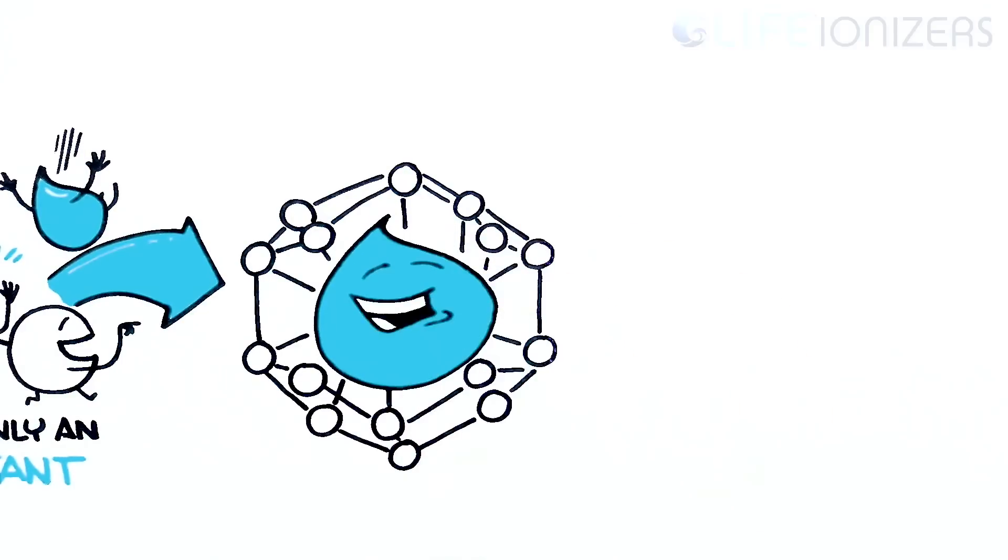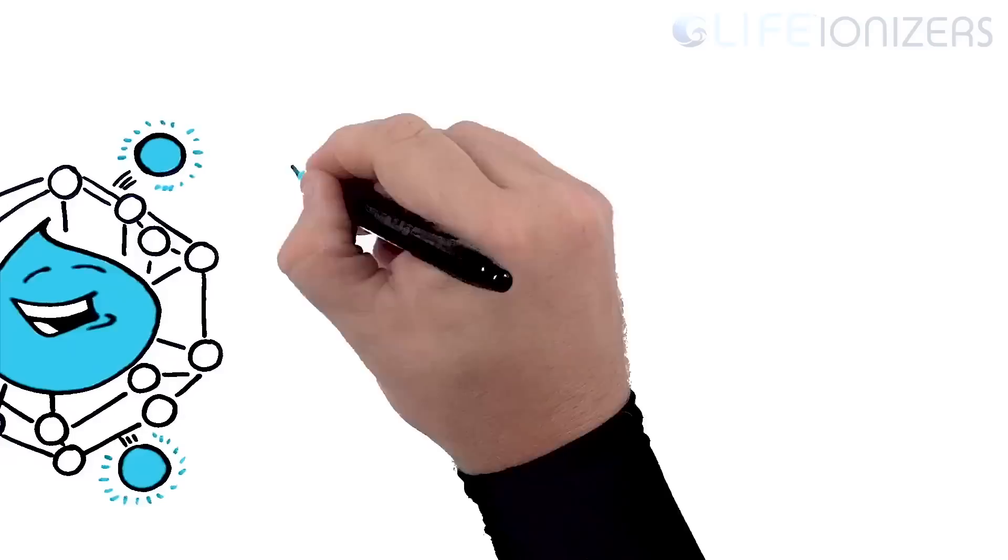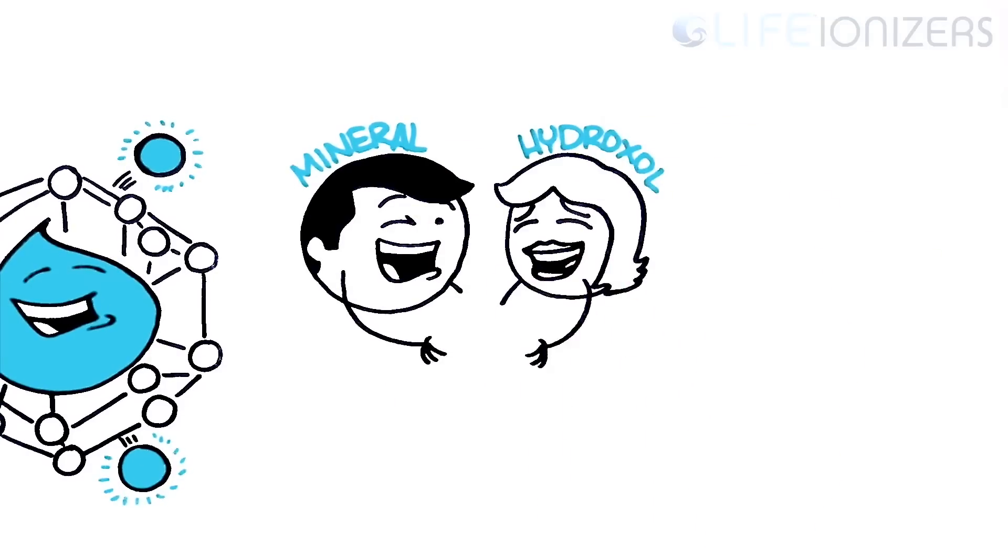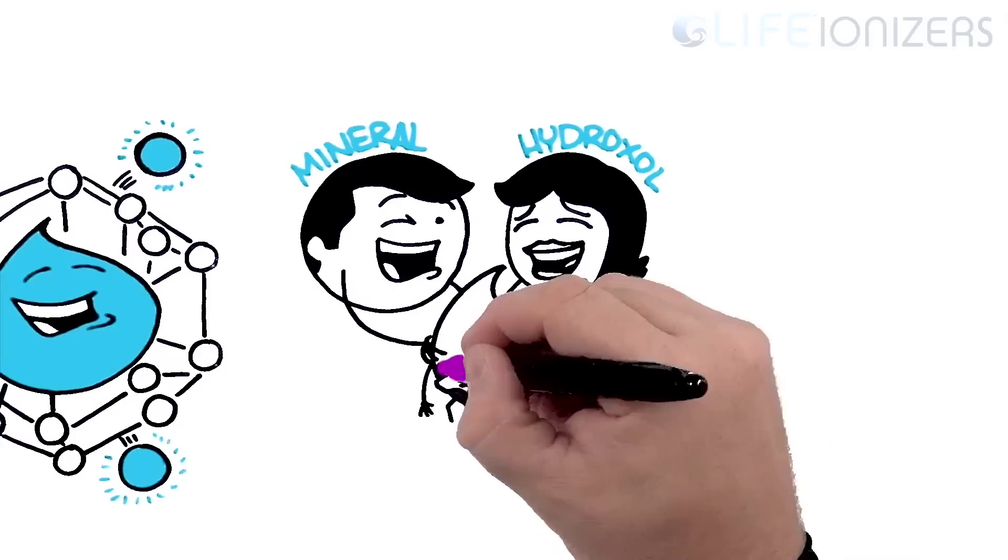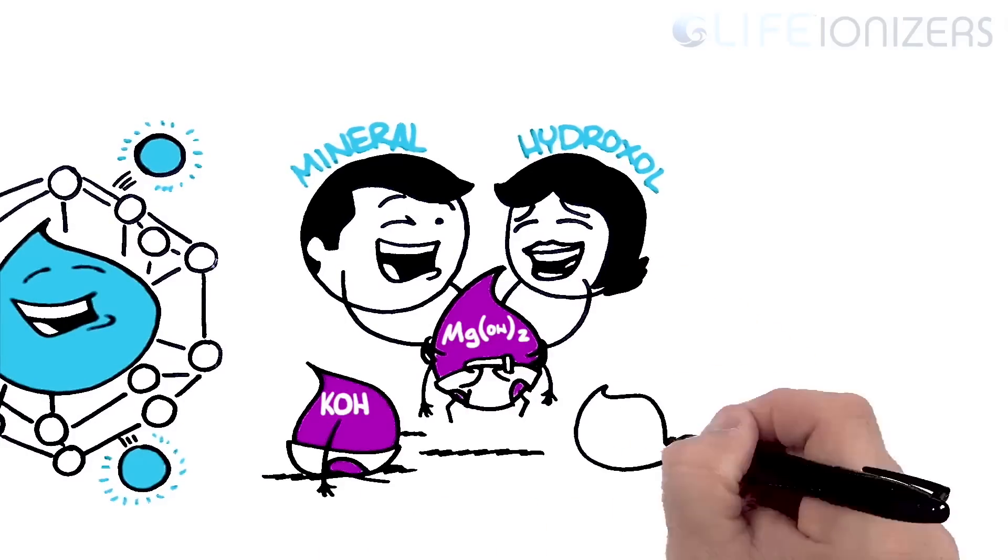On the other side, the acidic ions combine with water molecules to create aqueous acids. When a mineral ion meets a hydroxyl ion, they make mineral hydrates, such as magnesium hydrate, potassium hydrate, and calcium hydrate.